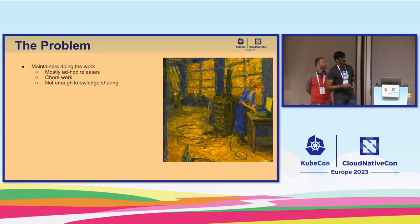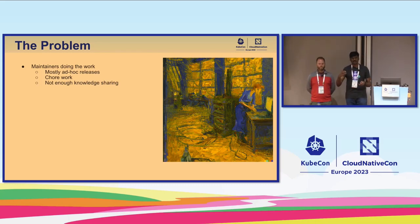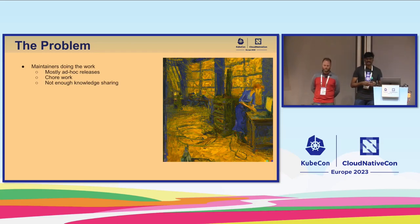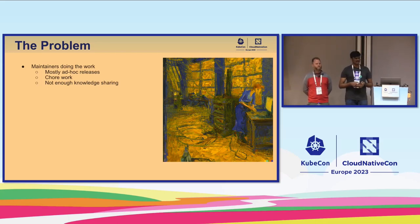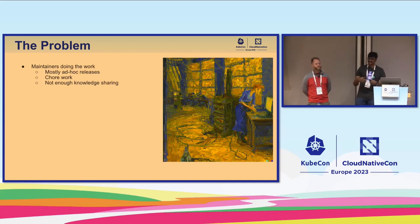Last year at KubeCon EU, we announced Cluster API v1, and that was a huge milestone for the project because it signified a maturity level that means more and more other projects in the community will start depending on Cluster API — examples being the Cluster API provider for OCI, AWS, Azure, and so on. This meant Cluster API had to get onto a predictable release cycle so that all dependent projects could base their own release planning on the announced schedule.